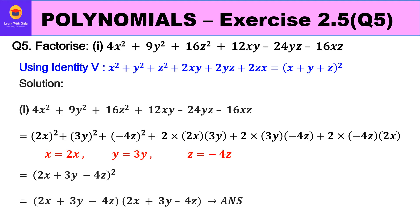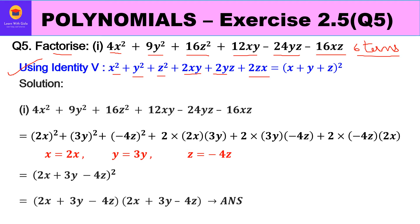The first part of Question 5 is: factorize 4x² + 9y² + 16z² + 12xy − 24yz − 16xz. There are six terms in this product, so we use Identity 5, which says x² + y² + z² + 2xy + 2yz + 2zx gives factors (x + y + z)². We need to identify what our x, y, and z are in the given product.